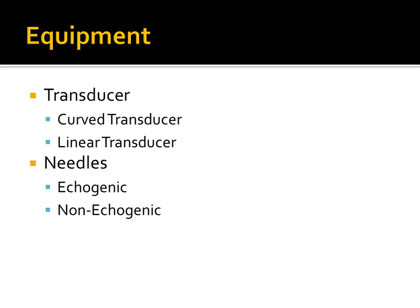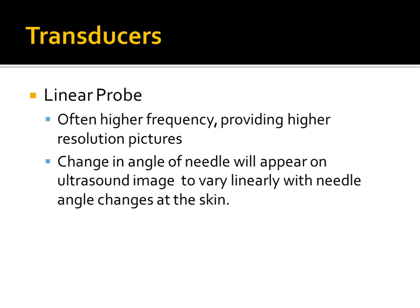Regarding transducer types: curved transducers are generally lower frequency than linear transducers. The linear probe offers higher frequency and higher resolution pictures. An important advantage of using a linear probe is that the change in the angle of your needle on screen varies linearly with the actual angle change above the skin. With a curved transducer, the angle you see on screen doesn't vary linearly with how much you change the angle in your hand, so it's more important to have direct visualization of the shaft of the needle, because it's harder to judge how much you need to adjust the angle.